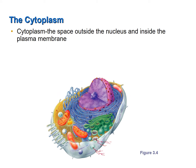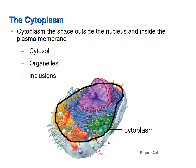The cytoplasm is the space outside the nucleus and inside the plasma membrane. It contains a fluid called the cytosol, organelles — which are the metabolic machinery of the cell — and inclusions.